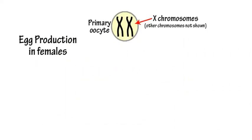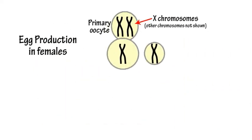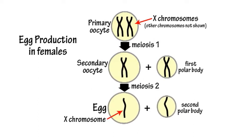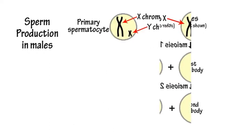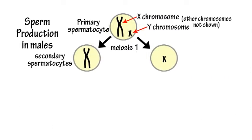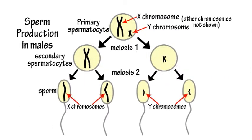In females, the process of meiosis results in the production of an egg containing a single or haploid set of chromosomes, including a single X chromosome. In males, however, half the sperm produced during meiosis contain an X chromosome, while the other half contain a Y chromosome.